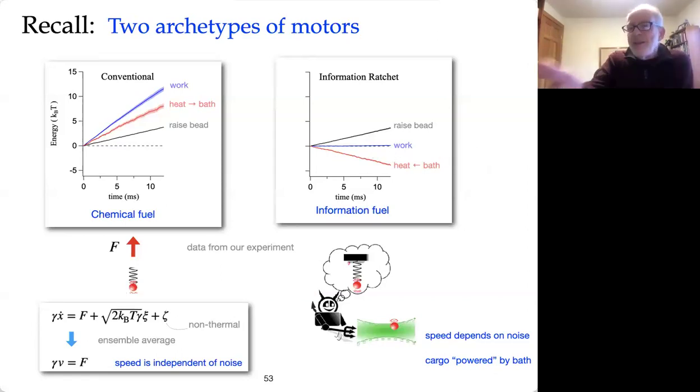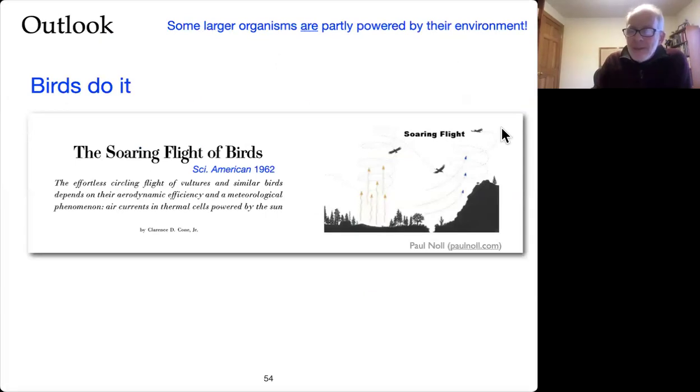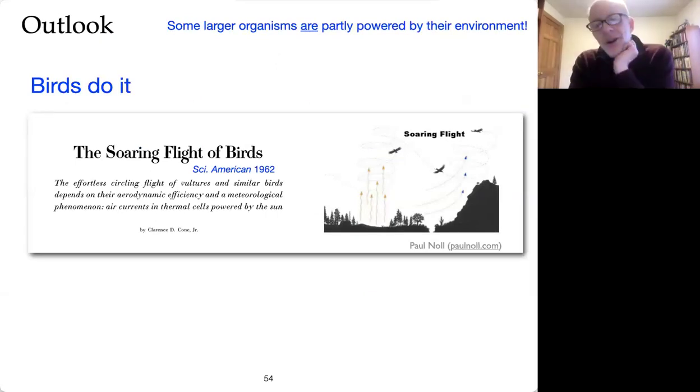At least these are two extremes of the situation. You can imagine where it's powered in part by one or the other. And so the question is, do the non-equilibrium fluctuations play any role in providing this direct motion of vesicles and things like that inside the cell?